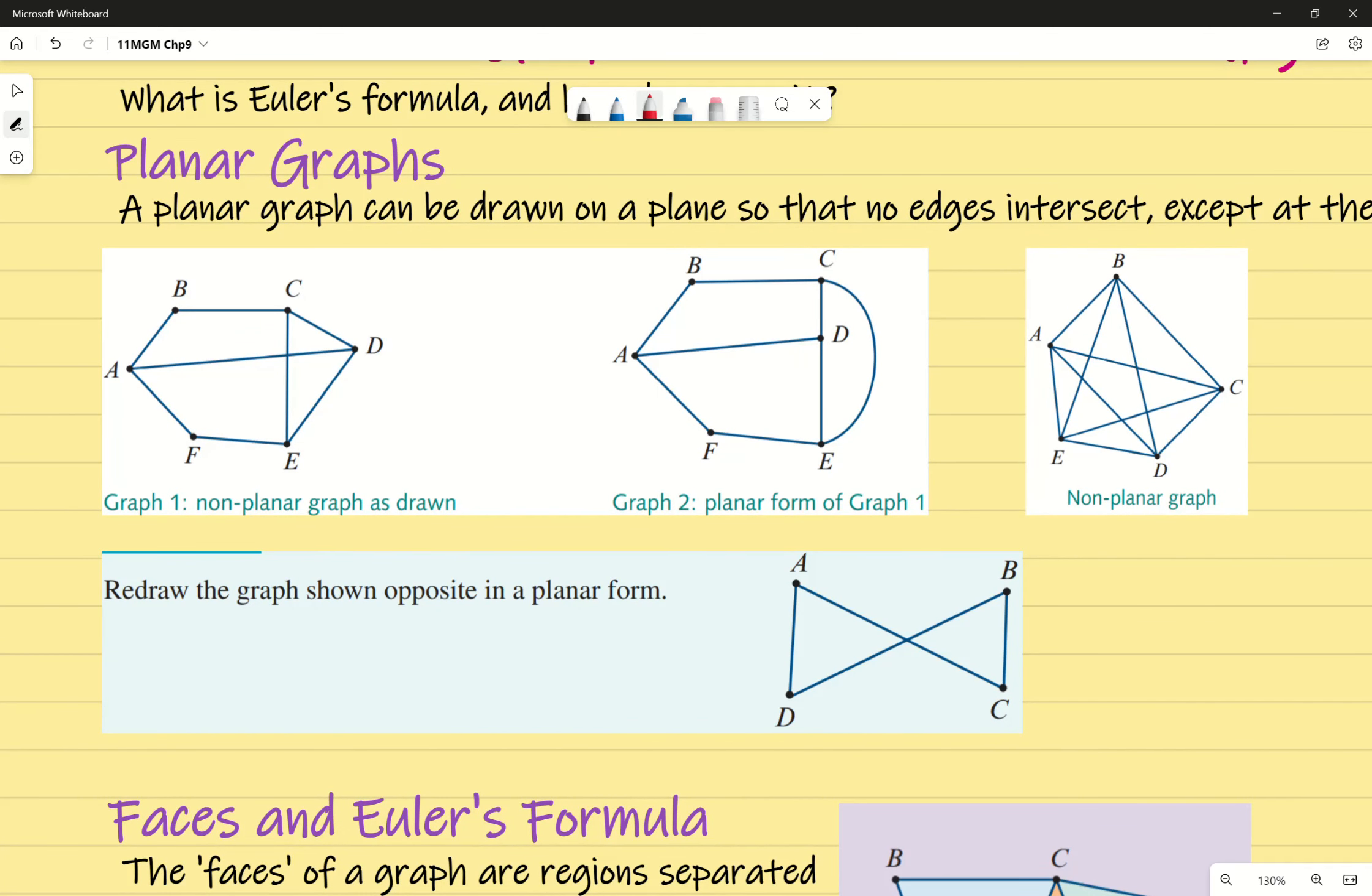Graph 2 is a planar form of graph 1. However, not all graphs can be drawn into planar graphs. The one on the right-hand side cannot be drawn into a planar graph.